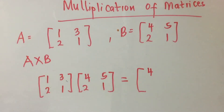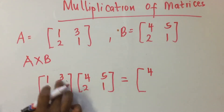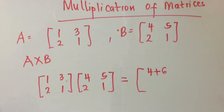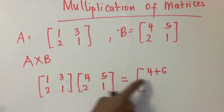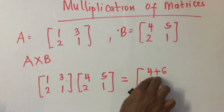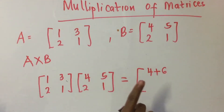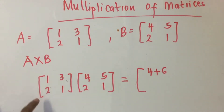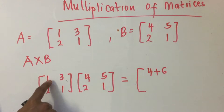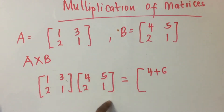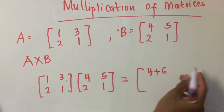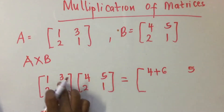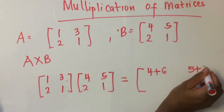3 times 2, and 6. Then 1 times 4, 3 times 2, and 6. And 3 times 2, and 6. Then 1 times 5, and 5; 3 times 1, and 3; and 5 plus 3.